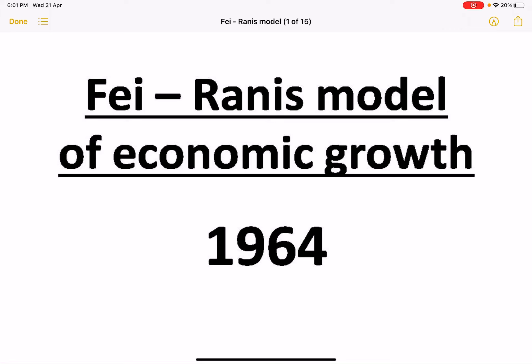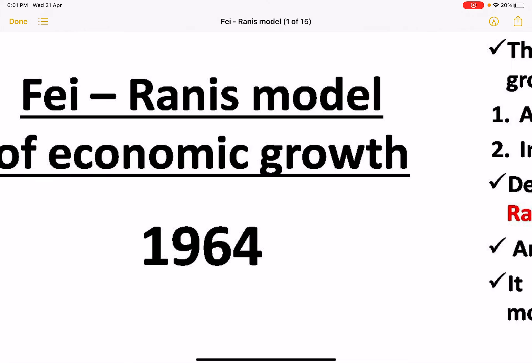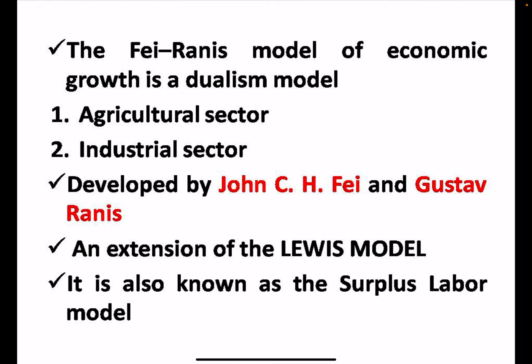Hello everyone, welcome to Egonomics by Vishwan Arpita. We will start a new topic: the Fei-Ranis model of economic growth, given in 1964. This is a dualism model which covers the agriculture sector and the industrial sector, and it was developed by John C. H. Fei and Gustav Ranis.